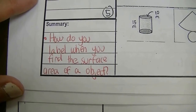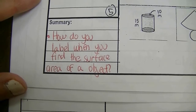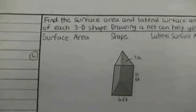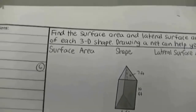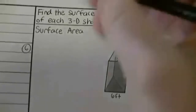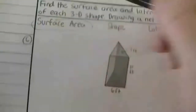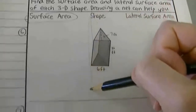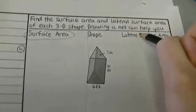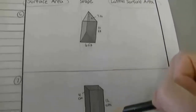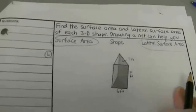The summary says: how do you label when you find the surface area of an object? It says find the surface area and lateral surface area of each 3D shape — drawing a net could help you. The left column is for surface area and the right column is for lateral surface area. Remember, lateral surface area is just the area of the sides — don't include the base or the top.